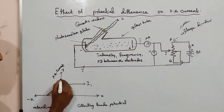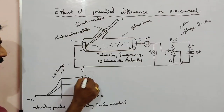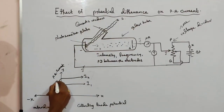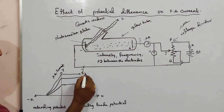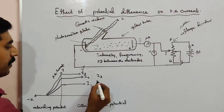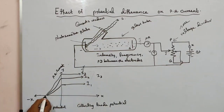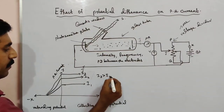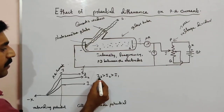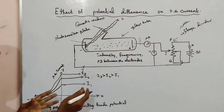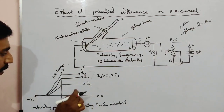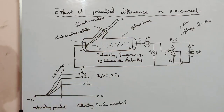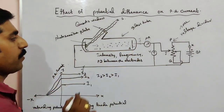That is the maximum current for a given intensity of incident radiation — that is I1. When the intensity of incident radiation increases, the number of emitting electrons increases and the current value increases. So the saturation current for intensity I2 is higher, and for I3 it is even higher. So I3 is greater than I2, which is greater than I1.